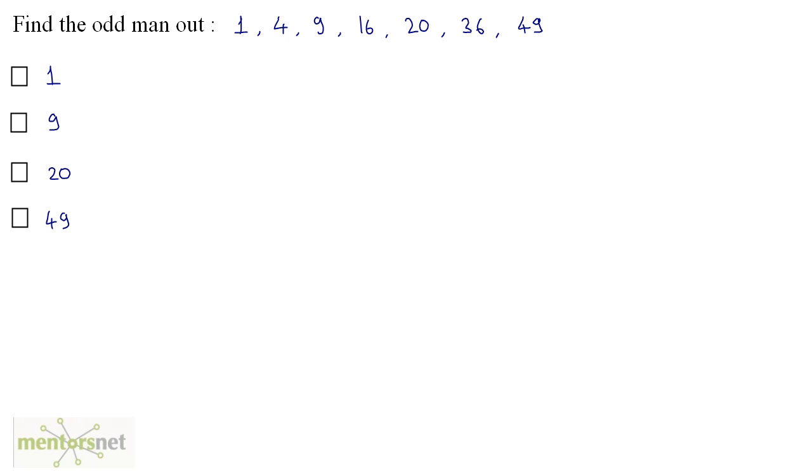Find the odd man out of these numbers. This is the odd man out. Why? Because all of the other numbers are perfect squares.